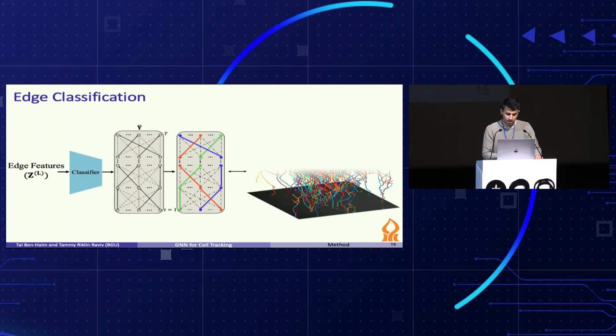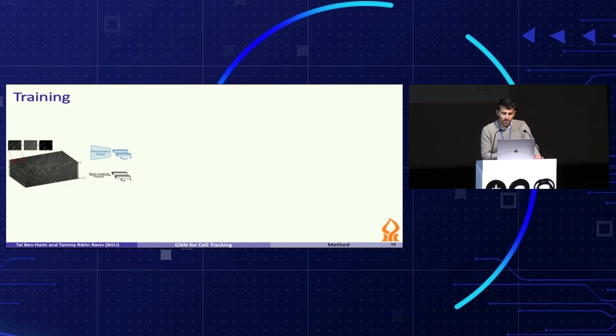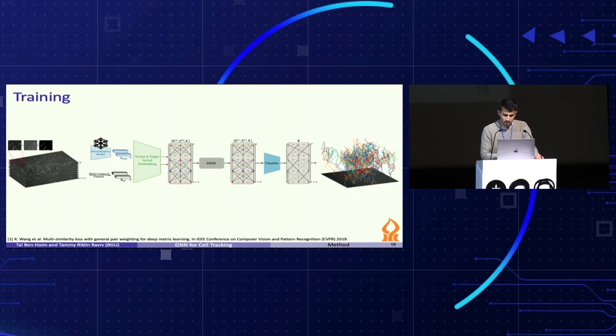We divide the training process into two steps. First, we use multi-similarity loss to train the feature extraction model using deep metric learning techniques. Then, this network is frozen, and we wish to classify the edges into active and non-active, defining a binary classification task. This is why we use weighted binary cross entropy to update the parameters of the entire network in an end-to-end fashion.